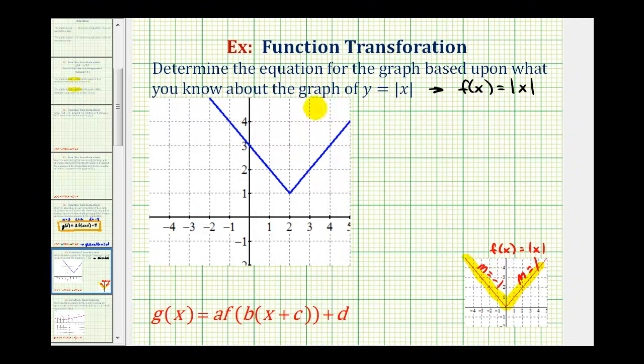If we look at the blue graph, notice how on the right, the slope is still positive one, and on the left, the slope is still negative one. So that leaves us with two other transformations. The graph has been shifted left or right, or up or down.